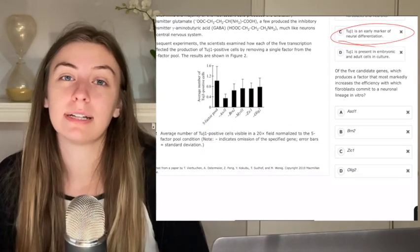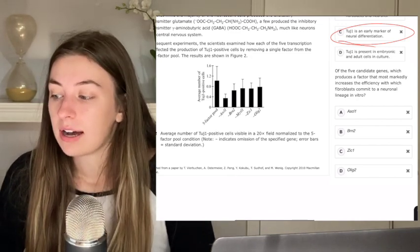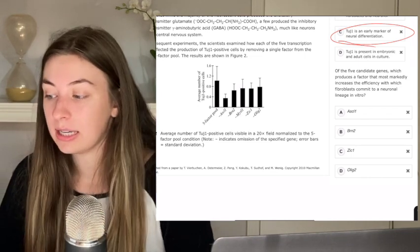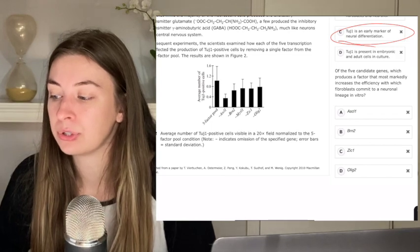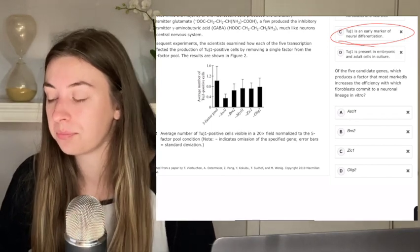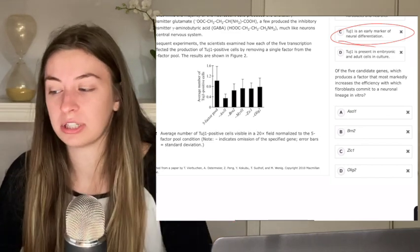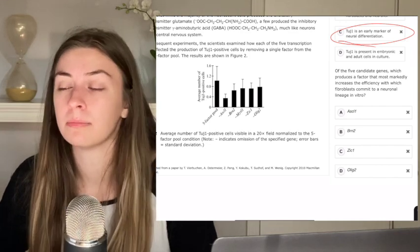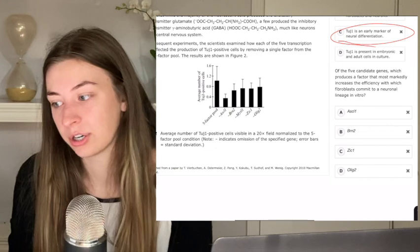Cause it includes a little bit of that figure interpretation that we were talking about earlier. It says of the five candidate genes, which produces a factor that most markedly increases the efficiency with which fibroblasts commit to a neural lineage in vitro? Again, just like the last question, it's very wordy. So let's actually get down to the meat of what they're talking about and put it in terms that we understand best as a test taker.